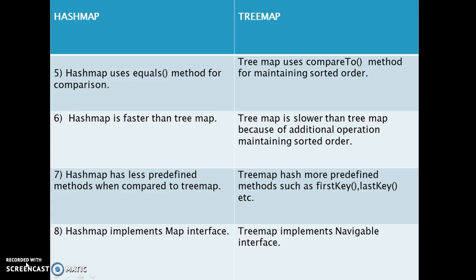HashMap is faster than TreeMap, but TreeMap is slower than HashMap because of the additional operation required for maintaining sorted order. TreeMap provides sorted order, which comes with an extra performance overhead because of the inbuilt sorted order.